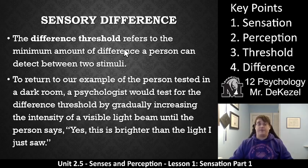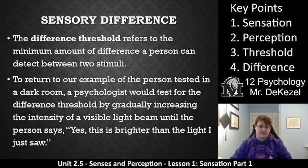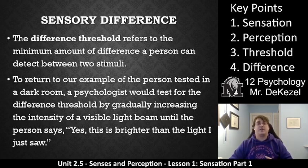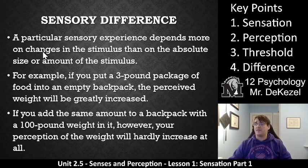Sensory differences — key point four. Something really important is the difference threshold: it refers to the minimum amount of difference a person can detect between two stimuli. A psychologist would test this by gradually increasing the intensity of visible light until the person says, yes, this is brighter than the light I just saw — kind of like when you go to the eye doctor and they ask, is this one better or is this one better? They are seeing if you can tell the difference. It's more useful for humans to be able to detect differences in senses, as there's rarely no sensory information coming in at all.